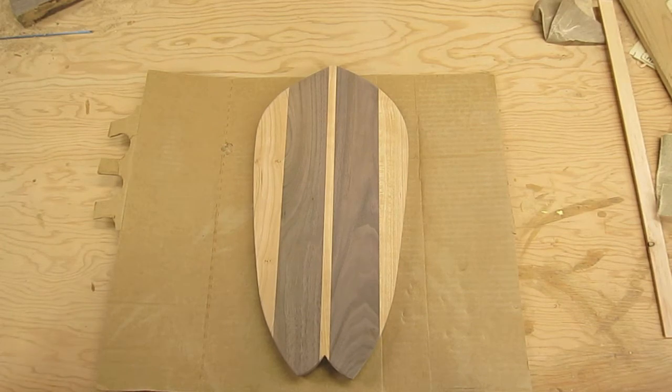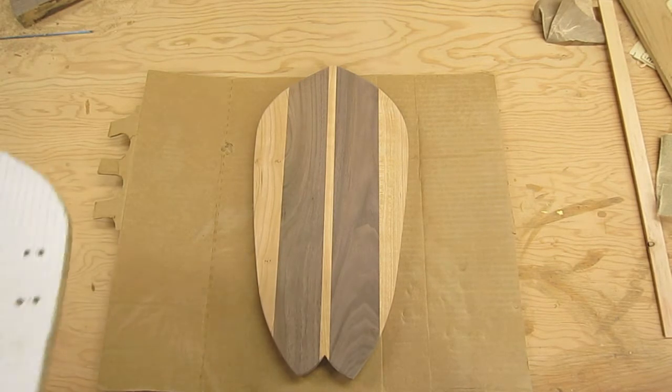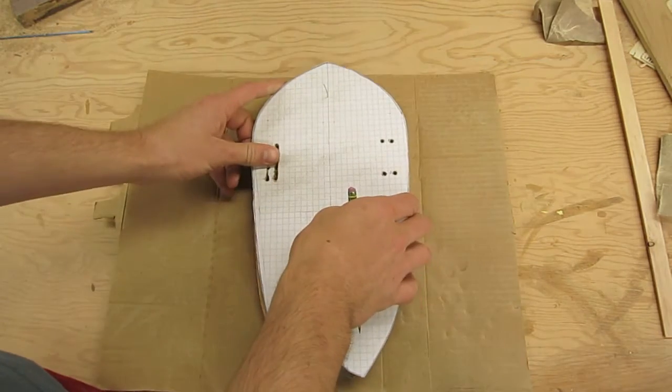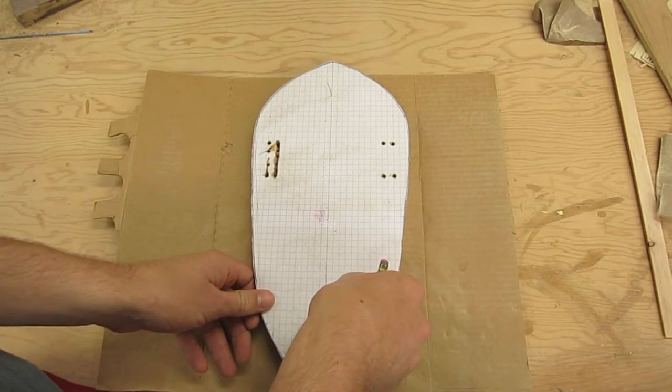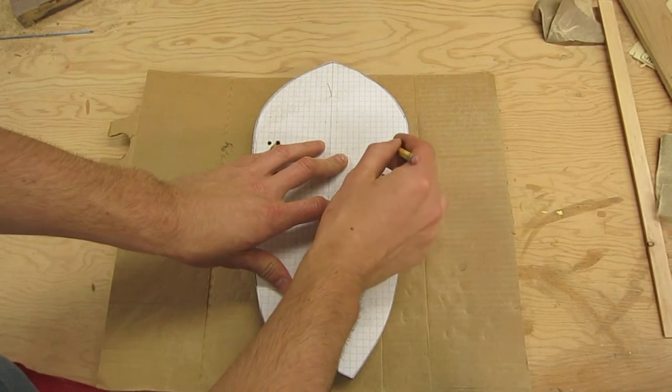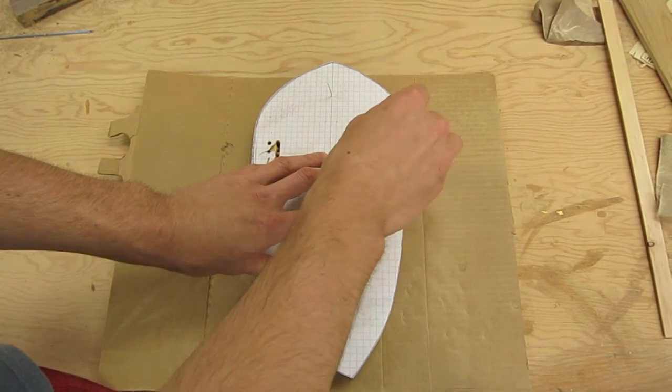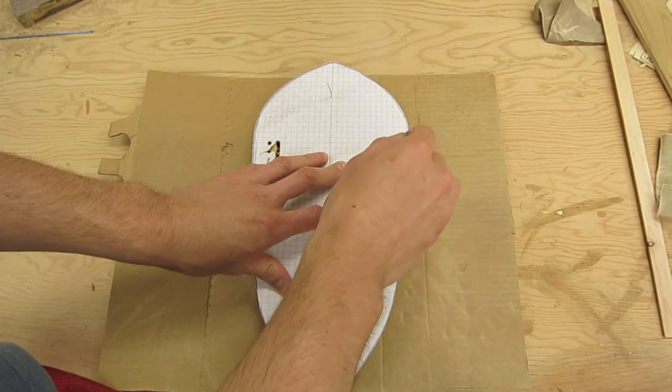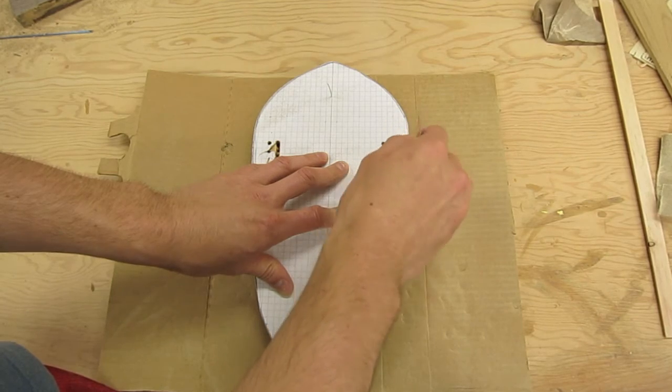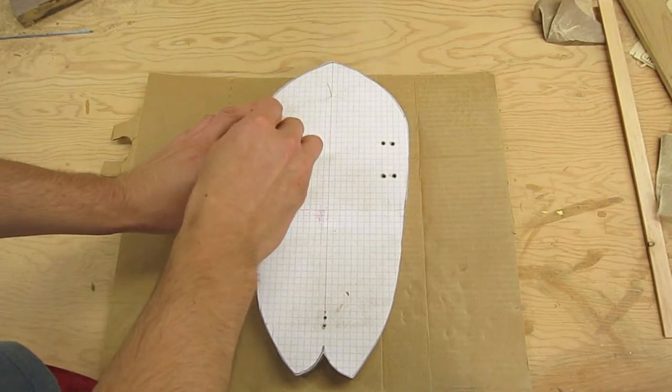Now that we have a nice clean sanded area, we're going to take our template again. And I have these holes drilled here. These are to mark the endpoints for where we're going to put our nylon webbing through. So we're going to have to cut slots here.